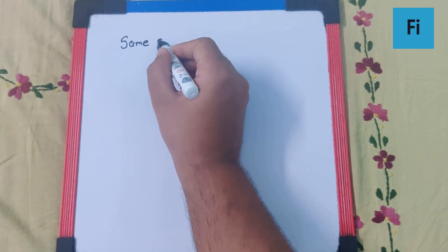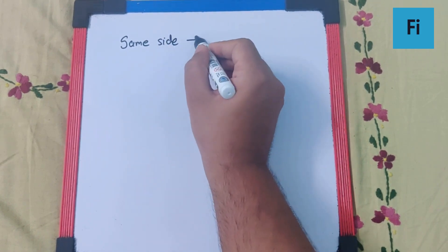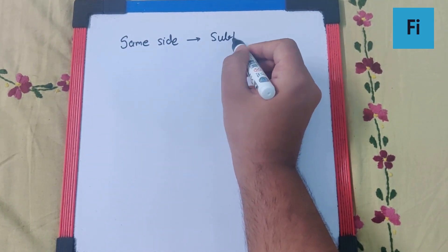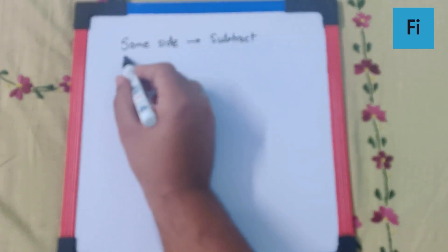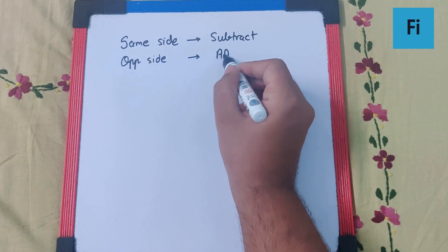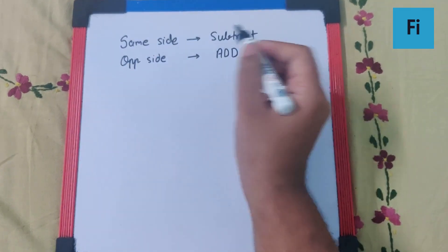They have said same side, so we have to subtract. If they had said opposite side of central bright band, then we would add the distances.